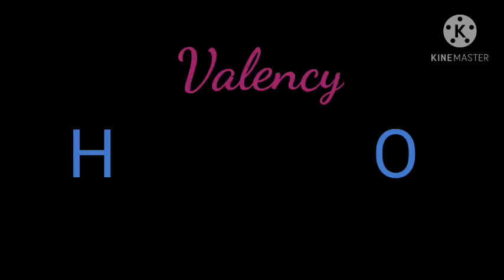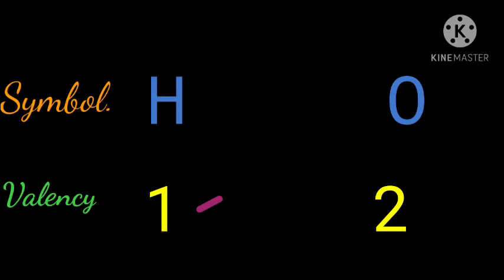Second, now write the valency of each element below its symbol. That is, the valency of hydrogen is 1 and that of oxygen is 2. Thus, we can have 1 below hydrogen and 2 below oxygen. Third, now crisscross the valencies of both the elements and write them as subscripts.